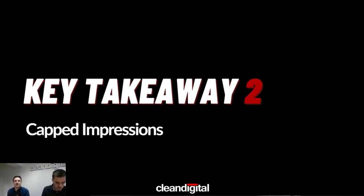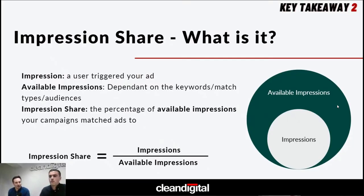Key takeaway number two: speaking specifically about capped impressions. I believe this is the single biggest thing we look for immediately when auditing an account in terms of understanding whether an account is wasting spend or not, and whether there's an opportunity to improve performance quickly. Impression share — a quick lesson: an impression is when your ad is shown. Impression share is the percentage of impressions your account is showing on, relative to the total number of impressions available within that market.